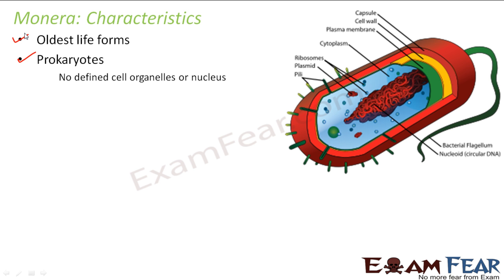That is why bacteria needed a separate kingdom. Because if you look at most other life forms, they all fall under the category of eukaryotes. Monera are all prokaryotes. They are unicellular — made up of one cell. The moment the number of cells changes, the entire structure and life cycle of that organism changes. Here there is just one cell, so this single cell performs all types of vital activities needed for the survival of the organism.